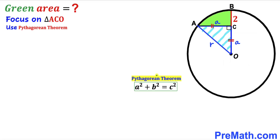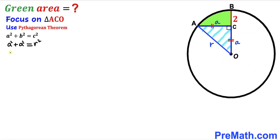We are going to apply the Pythagorean theorem on this triangle: a² + b² = c², where the hypotenuse is radius r. Filling in: a² + a² = r², which combines to r² = 2a². Taking the square root of both sides gives r = a√2. We'll call this Equation 1.